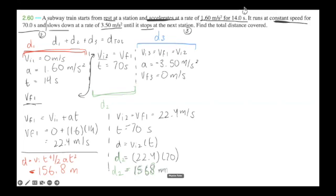And now let's get to d3. So d3, again, we know what vi is. Vi3 is equal to vf1 is equal to vi2 is equal to 22.4 meters per second, right? And we have our acceleration, we have our vf, and what we're going to do is the kinematic equation that uses all of these: vf squared is going to be vi squared plus 2ad.